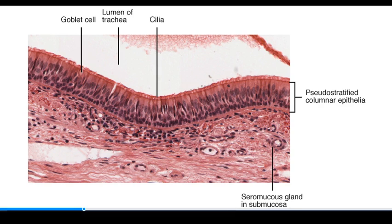Besides those overlapping areas, we find the pseudostratified epithelium in the nasal cavity, the nasopharynx, the larynx, the trachea, the bronchi, and into the bronchioles. Then eventually, probably at the level of the bronchioles, that pseudostratified epithelium gently transitions down to a simple squamous epithelium, which is what lines the alveoli.